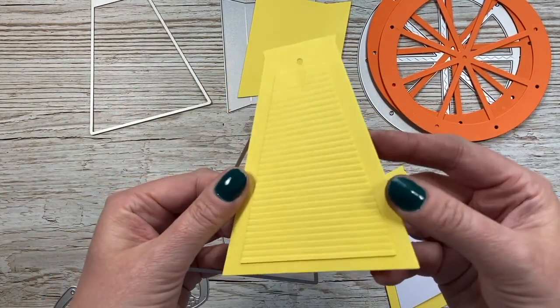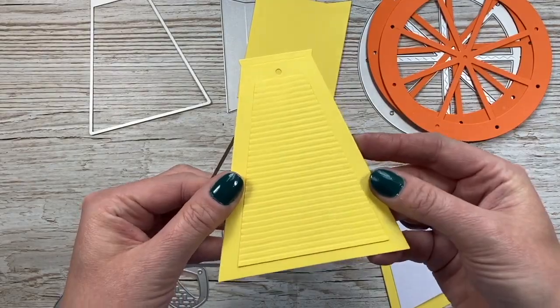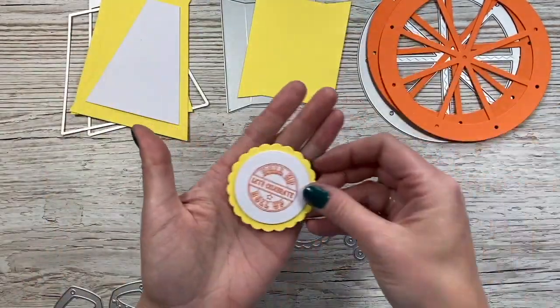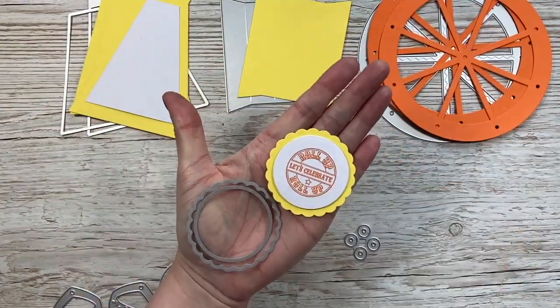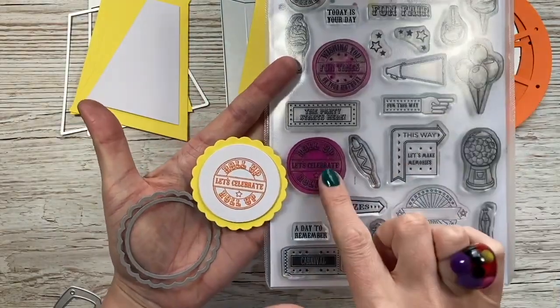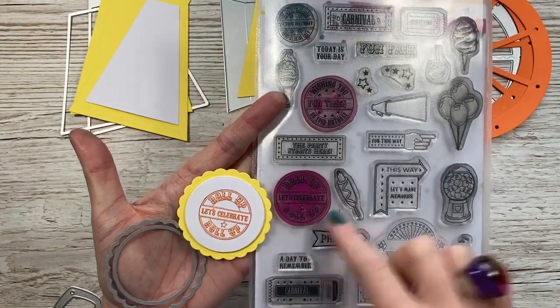I've actually embossed this one. I just ran it through using my scoreboard and used every track on the scoreboard just to create a bit of detail. These two here are for the sentiment and you can see I've pulled out the 'roll up let's celebrate' stamp from the coordinating stamp set.